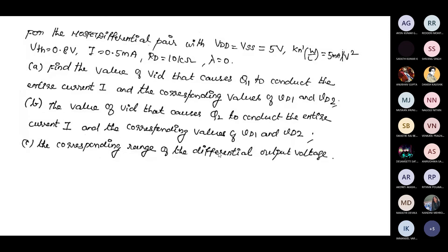For the MOSFET differential pair with VDD and VSS equal to 5 volts, KN dash W by L is 5 milliamps per volt squared, threshold voltage, bias current, drain resistance, and lambda equal to 0 are given. Part A: find the value of Vid that causes Q1 to conduct the entire current — this is Vid max. Part B: find the value that causes Q2 to conduct the entire current — this is Vid min, and find the corresponding voltages.